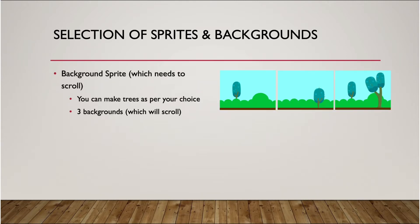To start with, we'll have to do the background selection. We'll have to choose multiple backgrounds so that we could scroll from right to left. These are the background sprites which are chosen, and we will have to write the code to scroll between them.